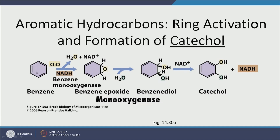Starting with benzene, benzene monooxygenase will add one oxygen by breaking a double bond so that oxygen attaches to both carbons. This is not a very stable position, so the molecule accepts a water molecule and ends up with two OH groups. Due to stereochemistry, the OH groups point in different directions because it gets too congested to have OH on neighboring carbon atoms in a benzene ring. This product then turns into catechol, which is easier to degrade — this is the monooxygenase pathway.